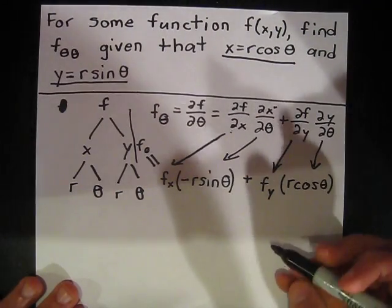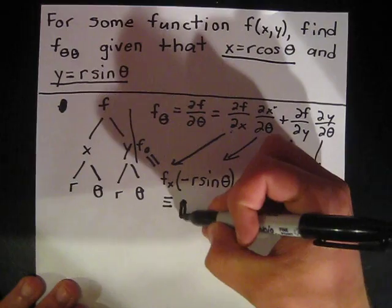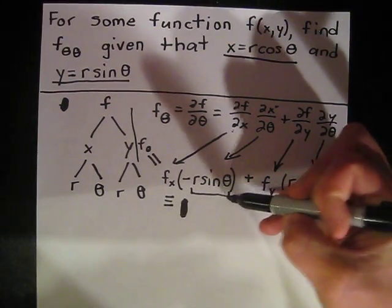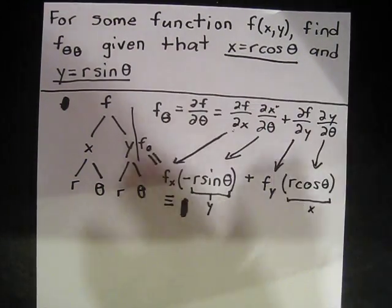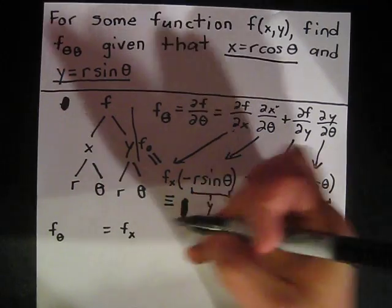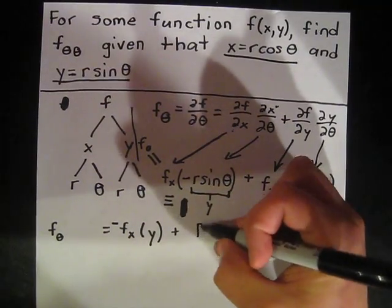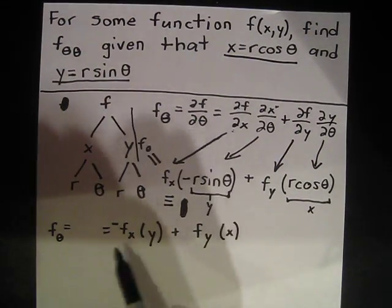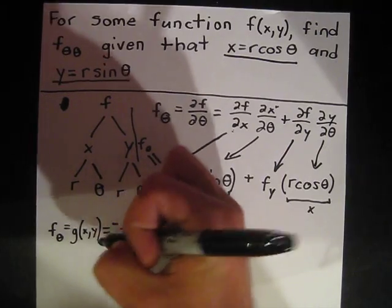So this gives us f sub theta. We can also simplify: the r sine theta term is just y, and r cosine theta is just x. So f sub theta equals negative f sub x times y, plus f sub y times x. I'm going to call this function g of x, y, since it's expressed entirely in terms of x's and y's.